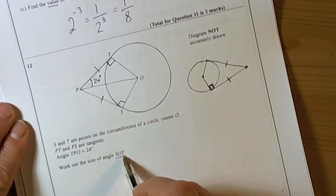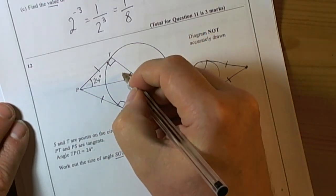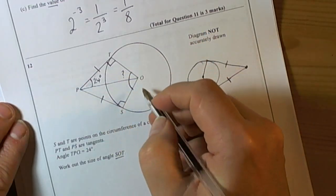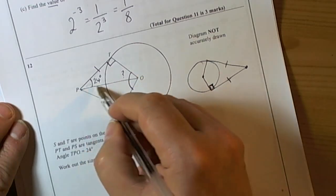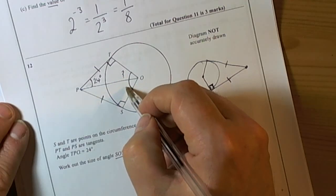So they want the angle of SOT, which is all of this. So if we find this bit here, then because the kite has a line of symmetry OP, that angle doubled will tell us the actual angle we want for the question.